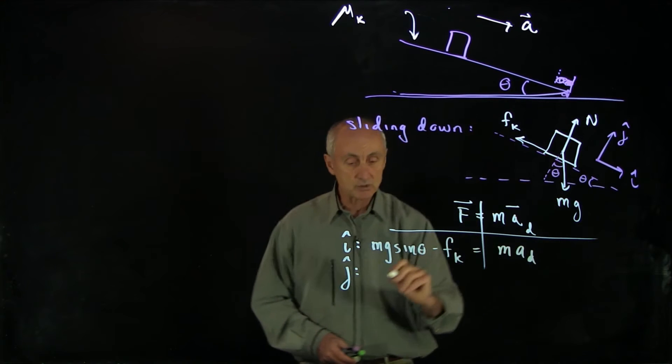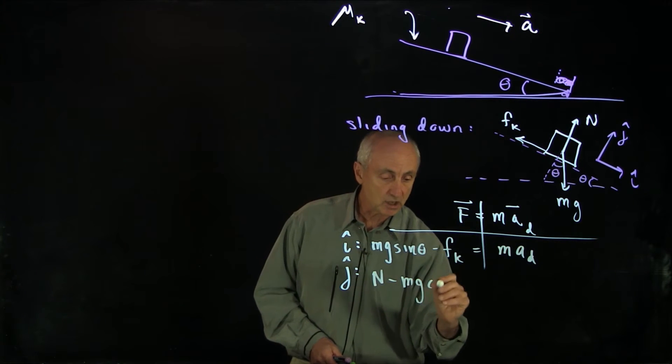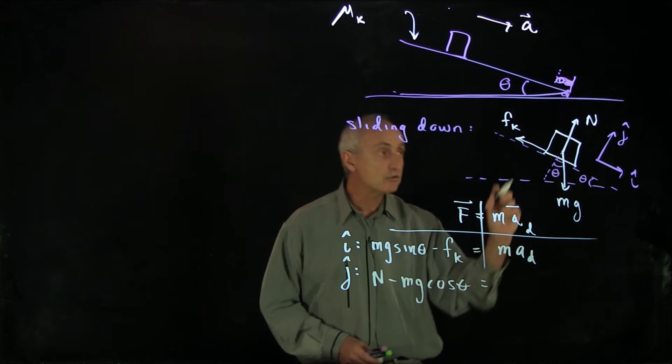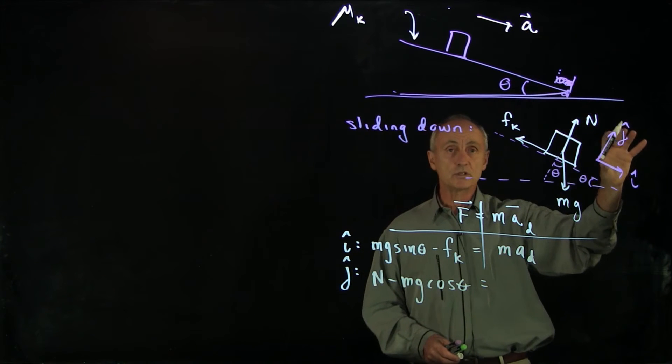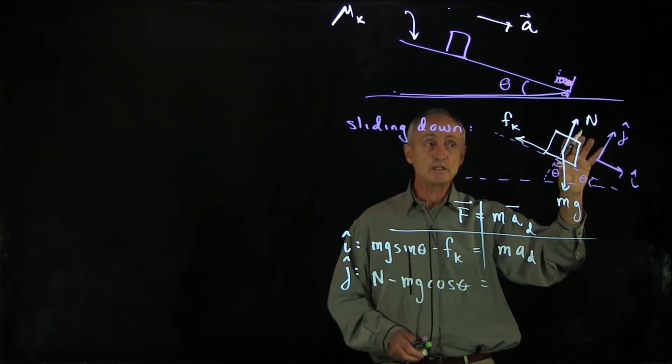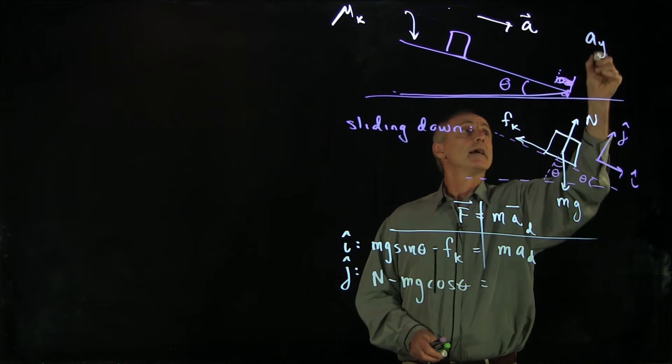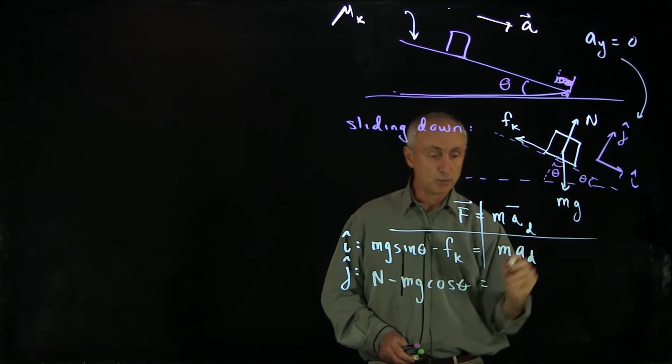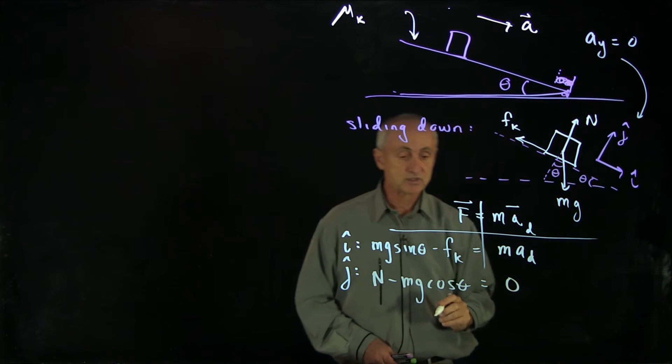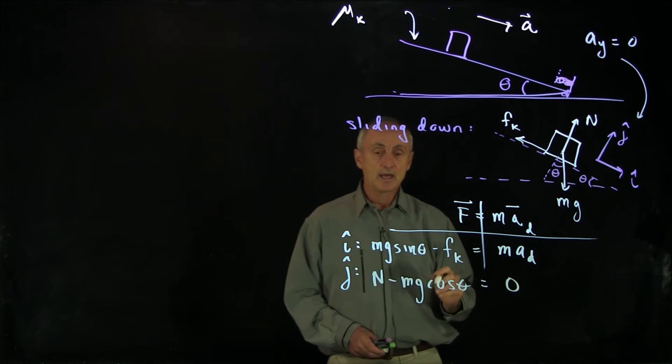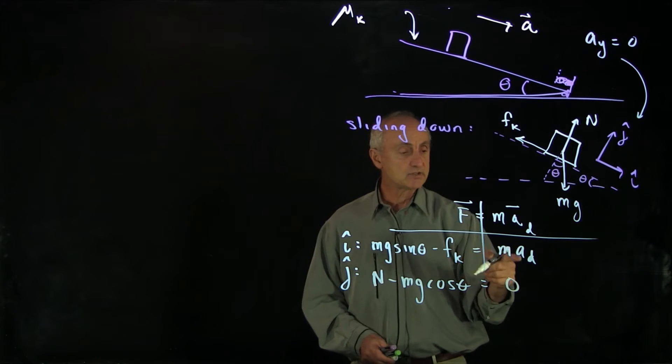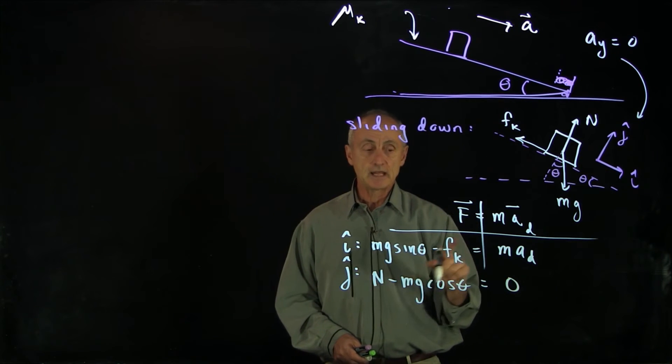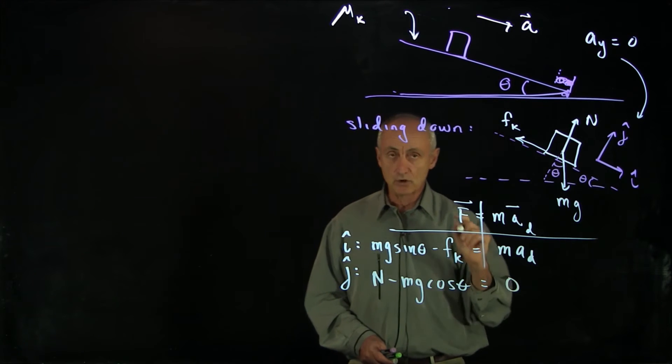In the vertical direction, we have the normal force minus mg cosine theta. And here's where our choice of coordinate system helps us, because the constraint to the system is that a_y is zero when we choose y to be the perpendicular direction. So this side is zero. Now I look at this and I see a, f, and n—that's only two equations and three unknowns.